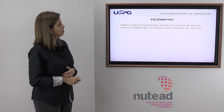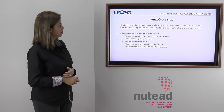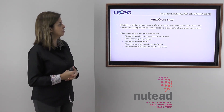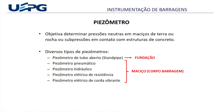O piezômetro é o segundo instrumento para determinar pressões neutras em maciços de terra ou rocha, e também subpressões em contato com estruturas de concreto. Existem diversos tipos de piezômetros: o de tubo aberto, conhecido como standpipe; piezômetros pneumáticos, hidráulicos, elétrico de resistência e elétrico de corda vibrante.